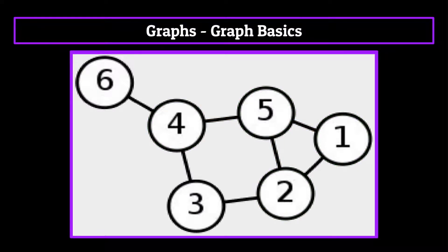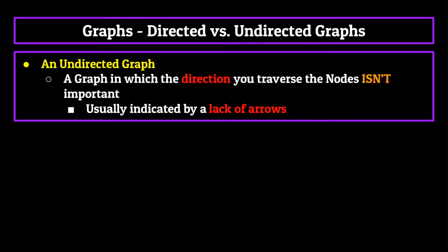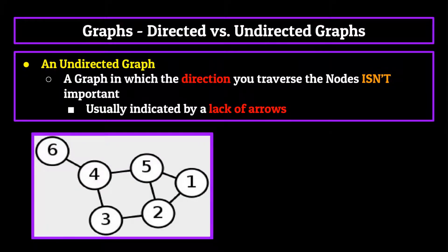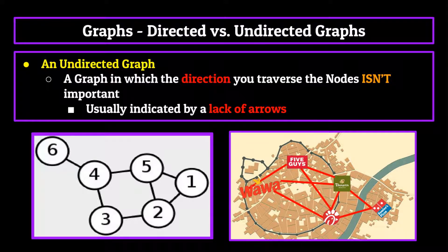Alright, now that we have the basics down, we can jump into the different attributes that a particular graph can have, starting with directed versus undirected. An undirected graph is one in which the direction you traverse the nodes isn't important. This is usually indicated by a lack of arrows pointing to specific nodes. Such was the case with our first example graph, or even the food example from the beginning of the episode. We can hop between nodes, or even back and forth between them without problems.